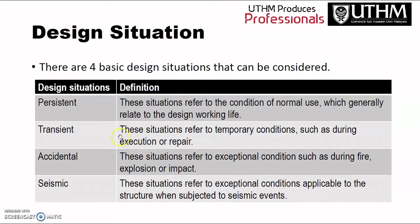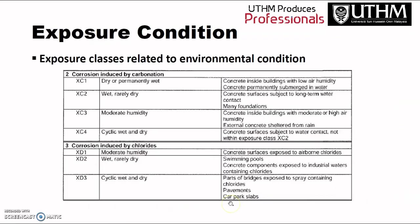There are four design situations to consider. Number one is persistent — referring to conditions of normal use, generally related to the design working life. Number two is transient — temporary conditions such as during construction or repair. Number three is accidental — exceptional conditions such as during fire, explosion, or impacts. Number four is seismic — exceptional conditions applicable when the structure is subjected to a seismic event, i.e., earthquake.